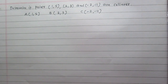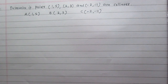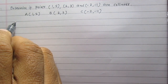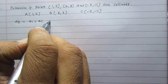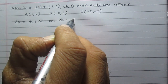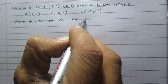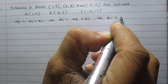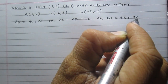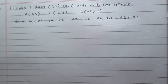We know that 3 points are collinear only when they are lying on the same straight line. Mathematically, this is possible only when AB equals AC plus BC, or AC equals AB plus BC, or BC equals AB plus AC. If any one of these 3 situations is true, it means these 3 points are collinear.